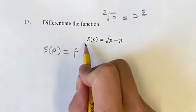So this is p to the 1/2 minus p, and that is p to the 1, just so we have that exponent there to deal with.